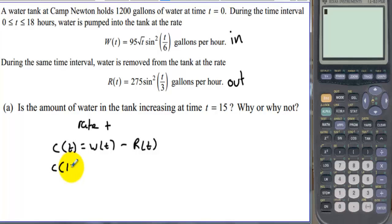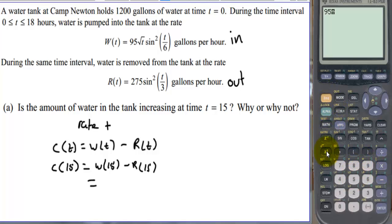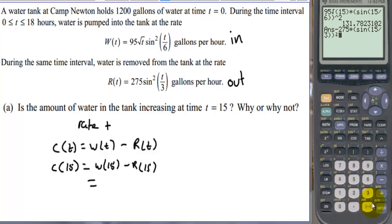We need to find C(15), which equals W(15) minus R(15). We plug 15 into the two functions: 95 times the square root of 15 times sine squared of (15/6), minus 275 times sine squared of (15/6). That equals negative 121.090.